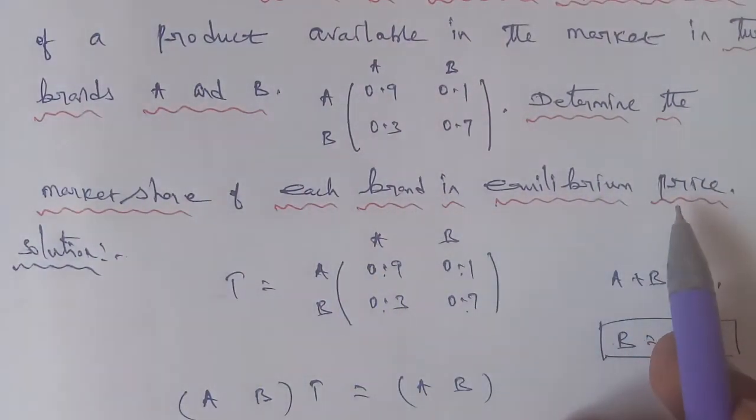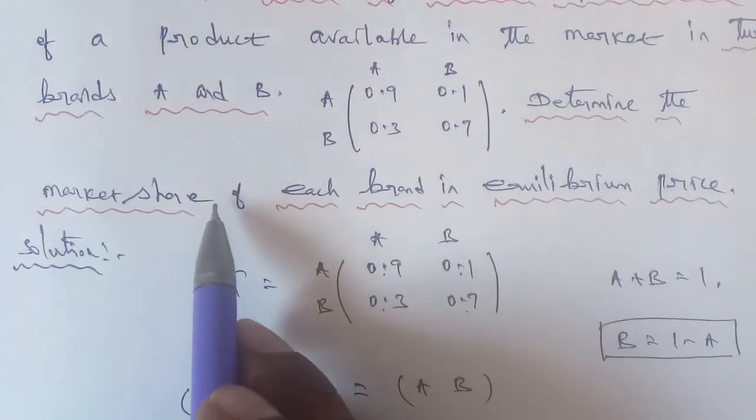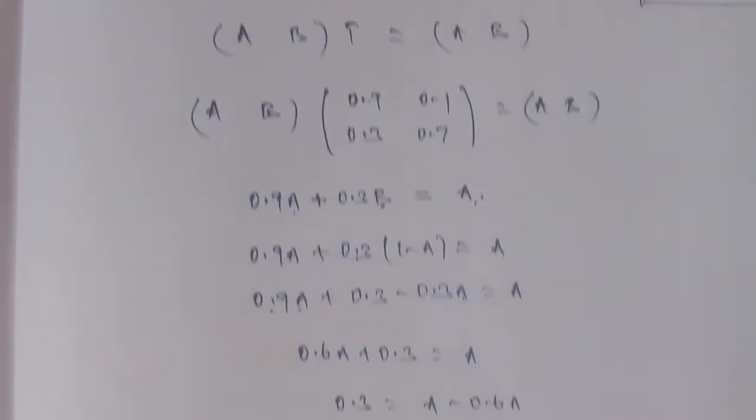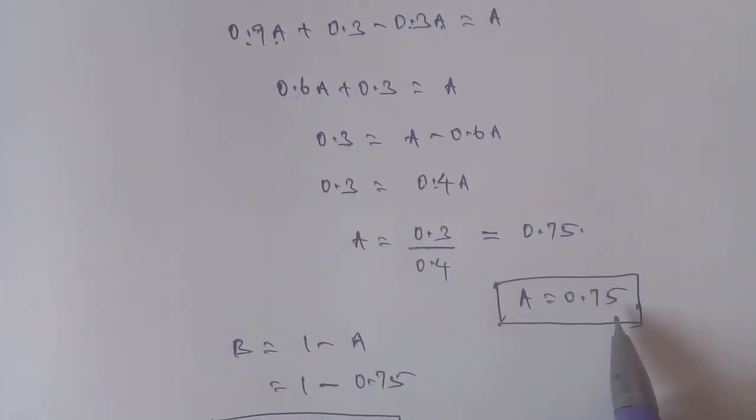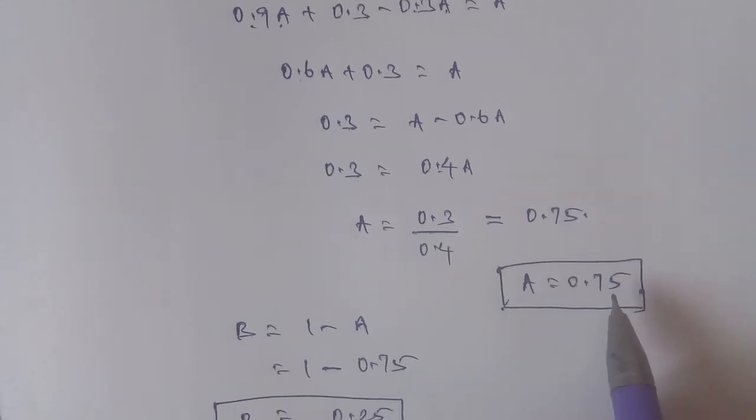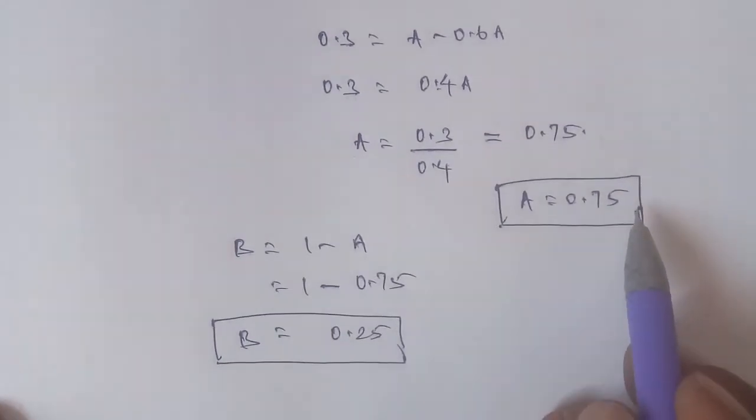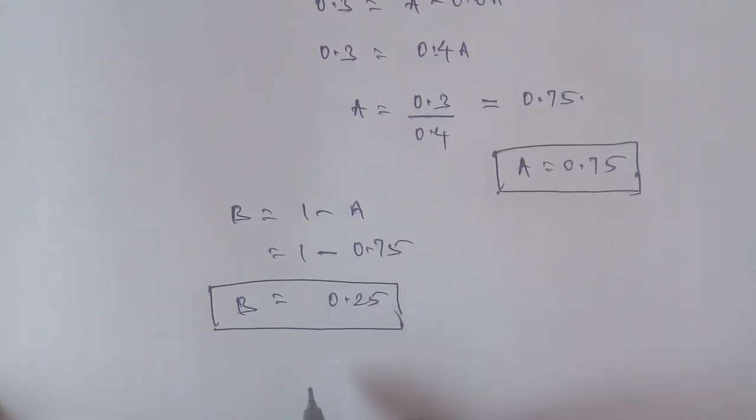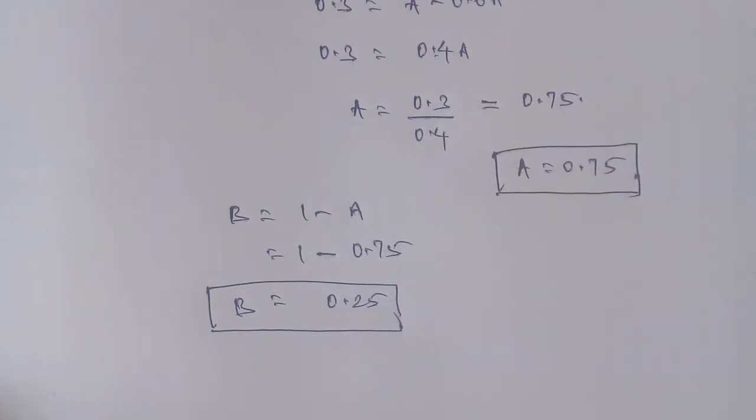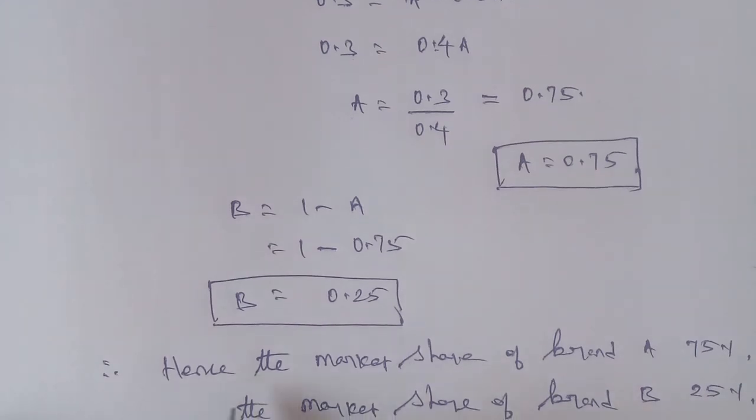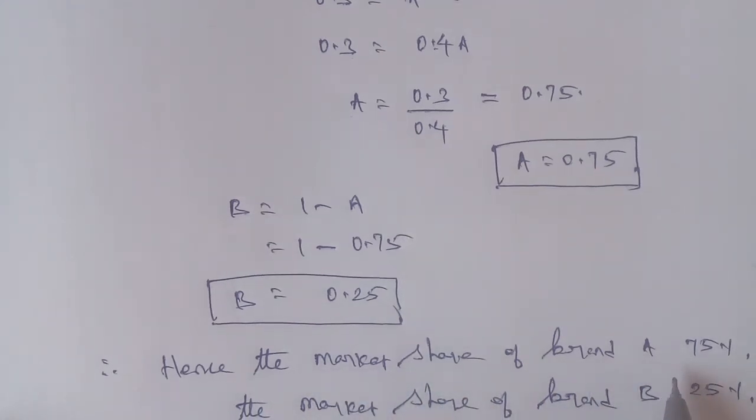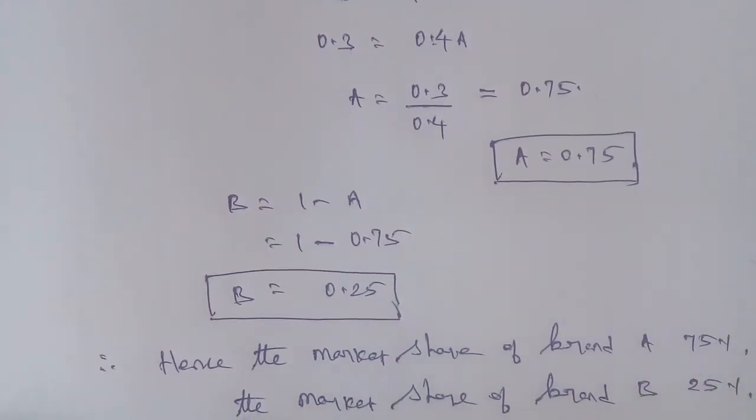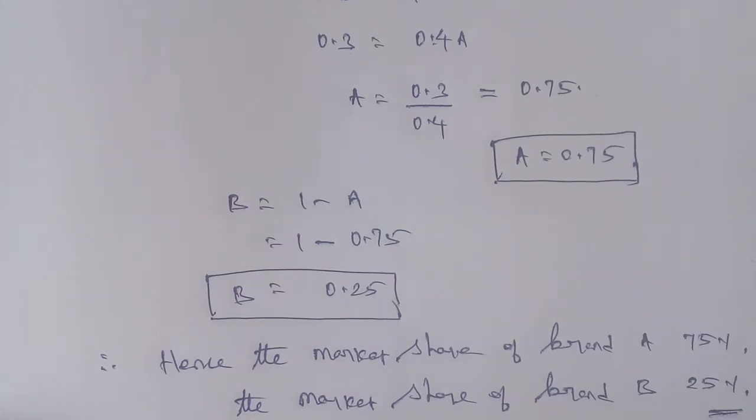To determine the market share of each brand in equilibrium price: the market share of brand A is 75%, and the market share of brand B is 25%. This is the answer.